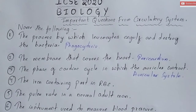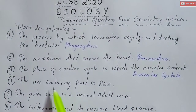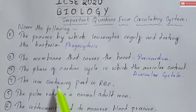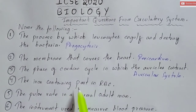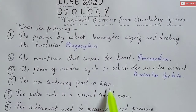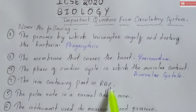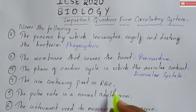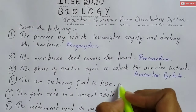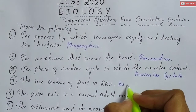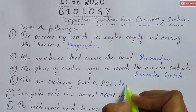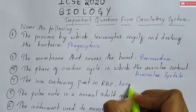Question number four — this is again very important. The iron-containing pigment in RBC, that is red blood cells, also known as erythrocytes. The iron-containing part is known as hemoglobin. It is also the respiratory pigment, so this is hemoglobin.